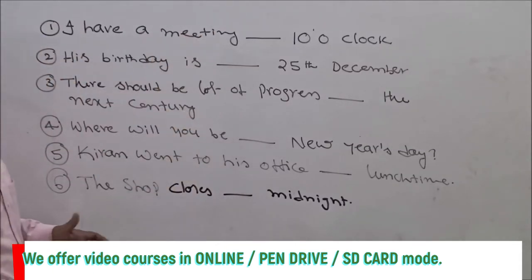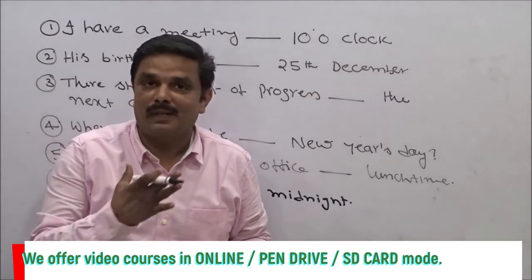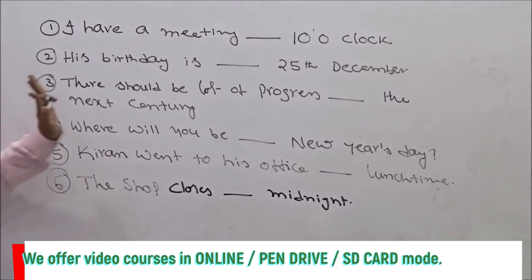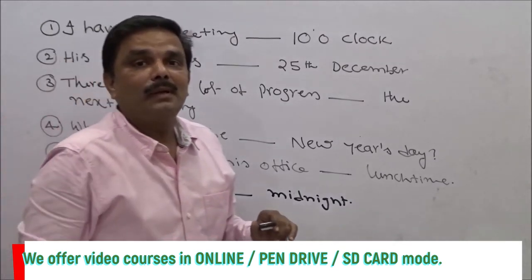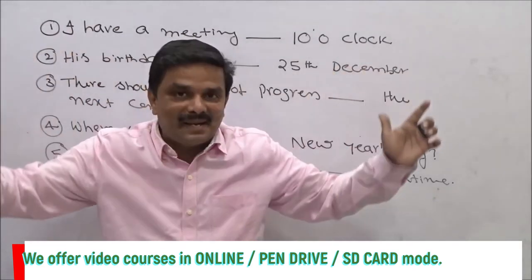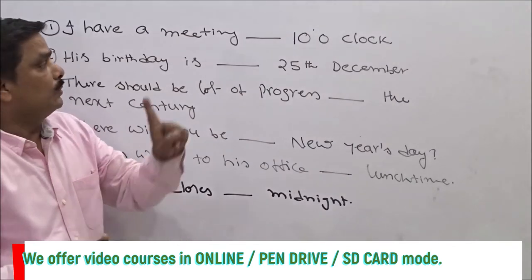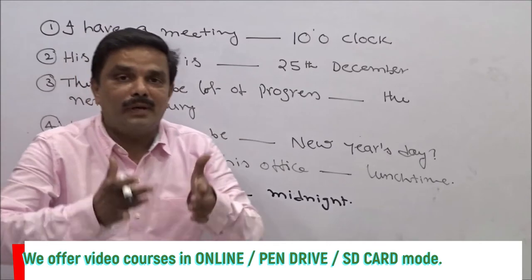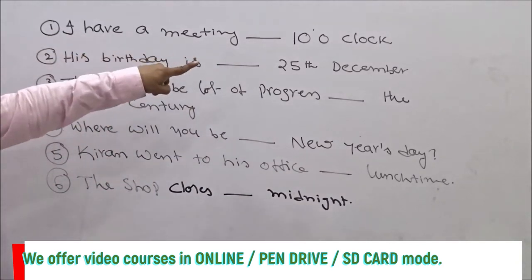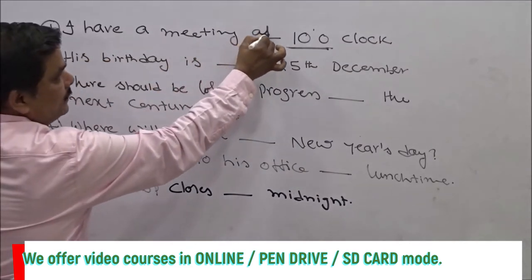Now look at these sentences. Pause the video and try to fill up the blanks with the preposition of time — in, on, or at. First: 'I have a meeting ___ 10 o'clock.' This is a specific time mentioned — so clearly: 'I have a meeting at 10 o'clock.' Next: 'His birthday is ___ 25th December.' This is not a specific clock time, so 'at' is ruled out. A date is given, so: 'His birthday is on 25th December.'